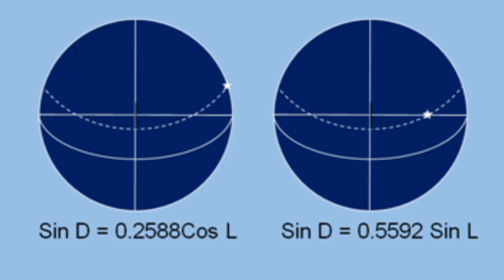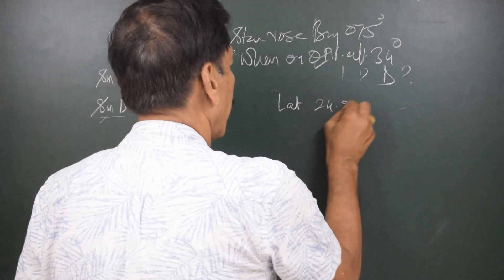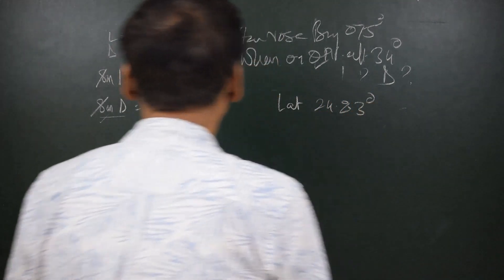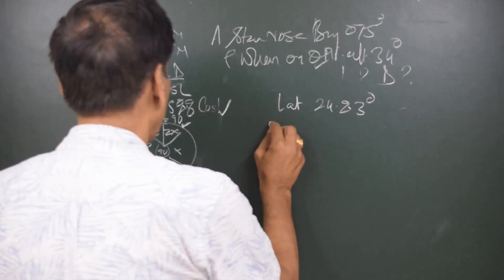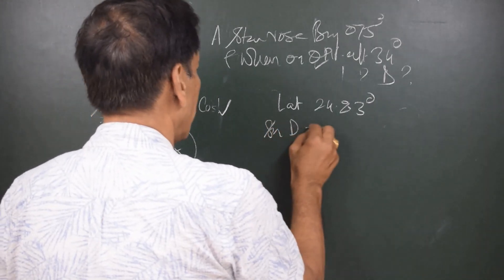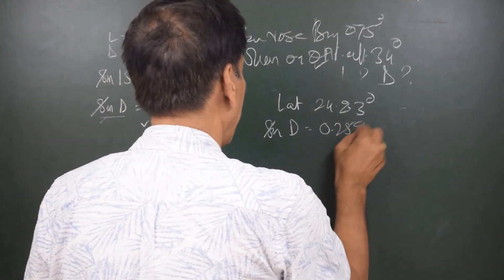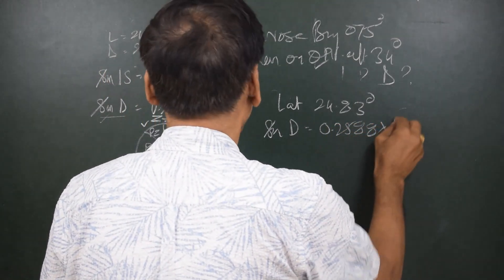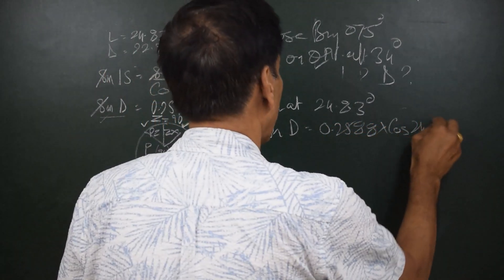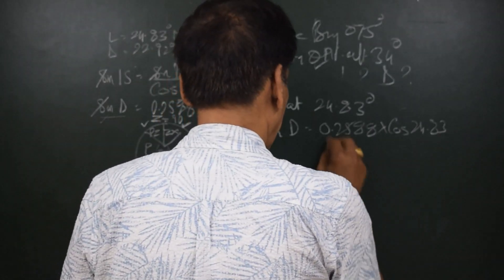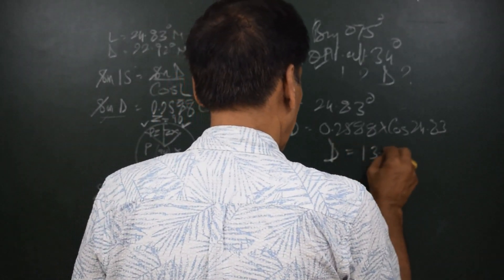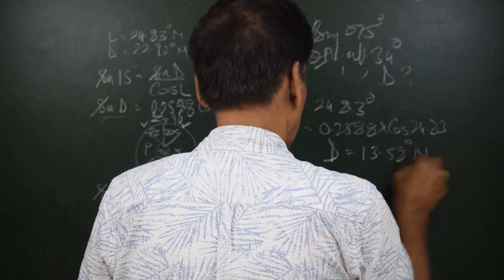Having found the latitude as 24.83 degrees, what we do is we substitute in any of the equations. Suppose we substitute here. We have sin D is equal to 0.2588 into cos of 24.83. It gives me 13.58. So, declination is 13.58 degrees north.